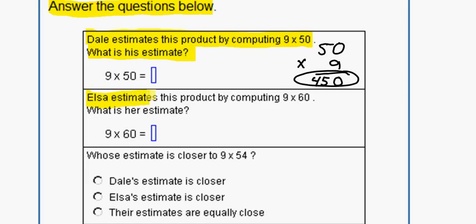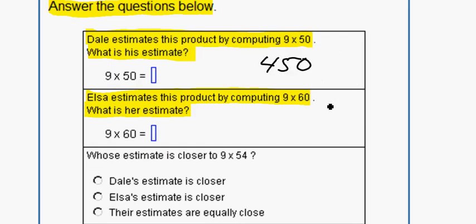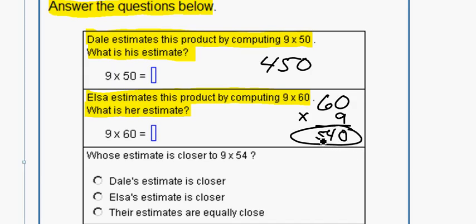Elsa estimates this product by computing 9 times 60. What is her estimate? If we work out her estimate, we get 60 times 9 equals, 9 times 0 is 0, and 9 times 6 is 54. So her estimate is 540.